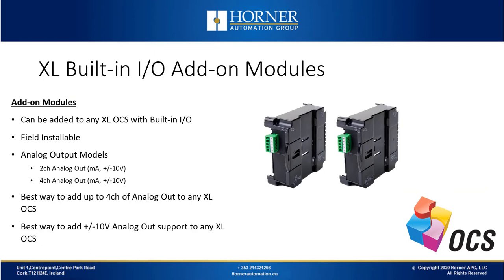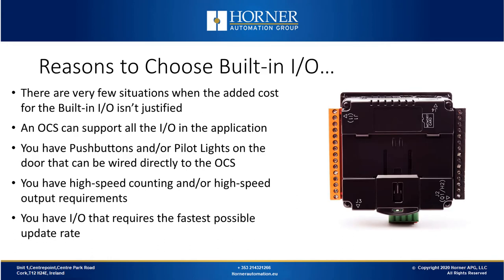There are a limited number of add-on modules available, including a very popular one we call an X-DAC. Under the hood of any XL Series product, you can add an extra 2 or 4 channels of analog output with 12-bit resolution. It's also the best way of adding plus or minus 10V capability on the output side to any XL Series OCS. Here are some reasons to choose built-in IO: an OCS can support all of the IO in the application. If you have high-speed counting or high-speed output requirements, the built-in IO is inexpensive and very powerful. And if you need IO that is as fast as possible, the built-in IO is perfect for you.